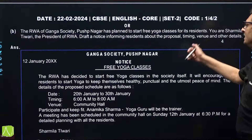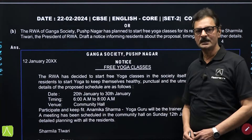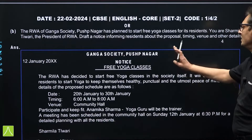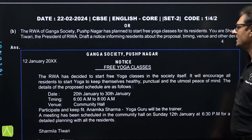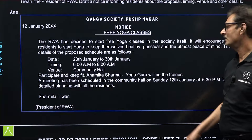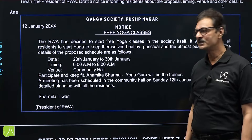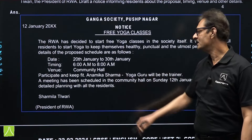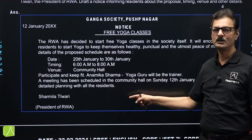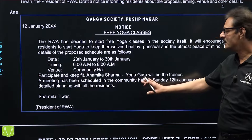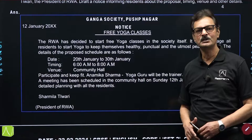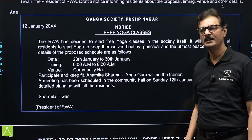The other notice was related to yoga classes starting soon in the society — Ganga Society, Pushmanagar, the date, free yoga classes — and the things to devise were: from when the yoga classes will be scheduled, where it will be, what will be the charges, who will be the trainer or coach. All those things had to be mentioned in this notice. Simple, straightforward notice solution. I do not think any student must have found notice writing difficult.